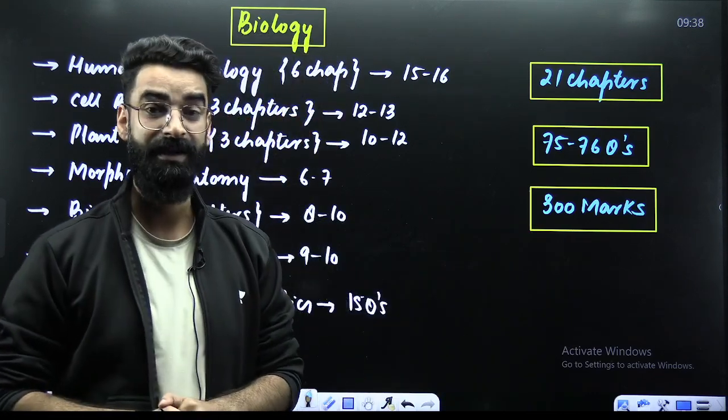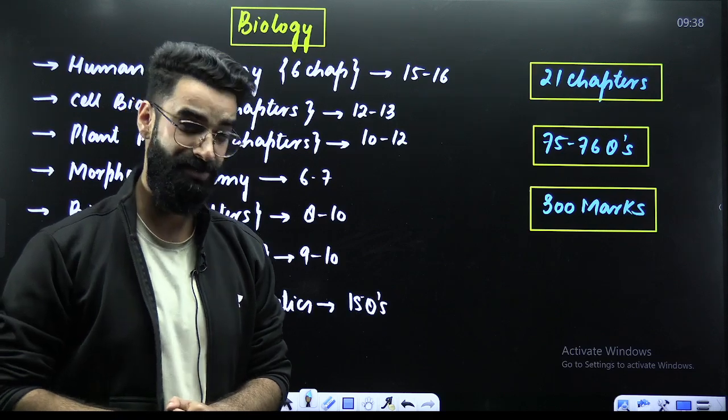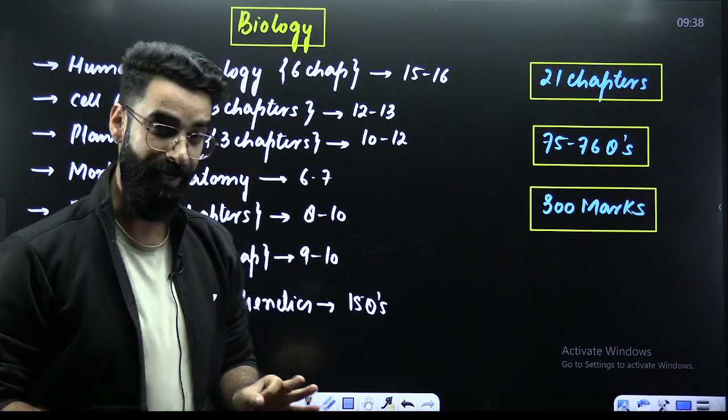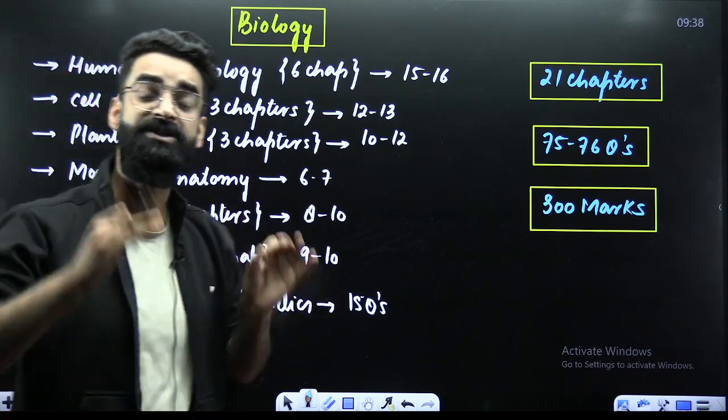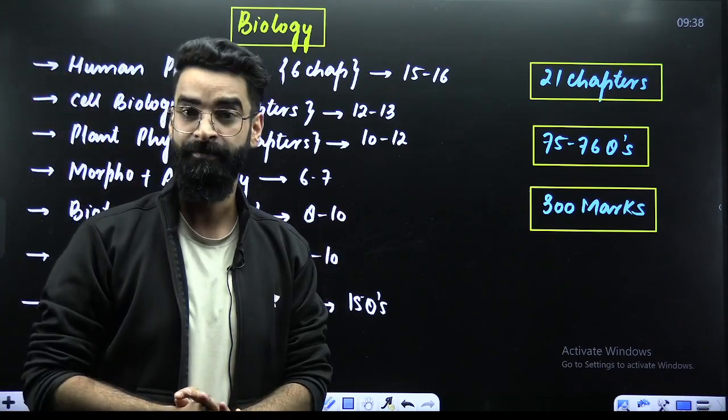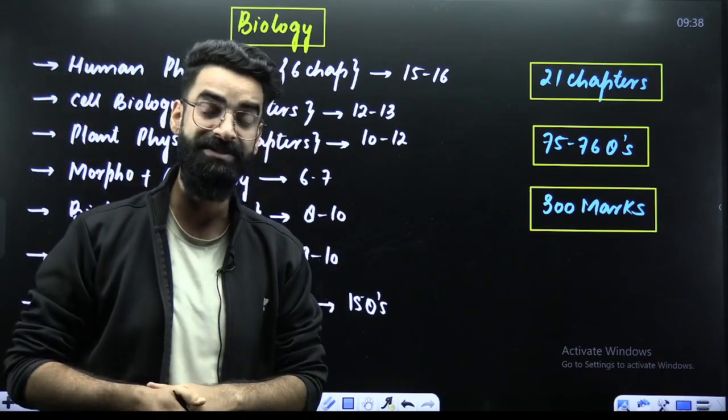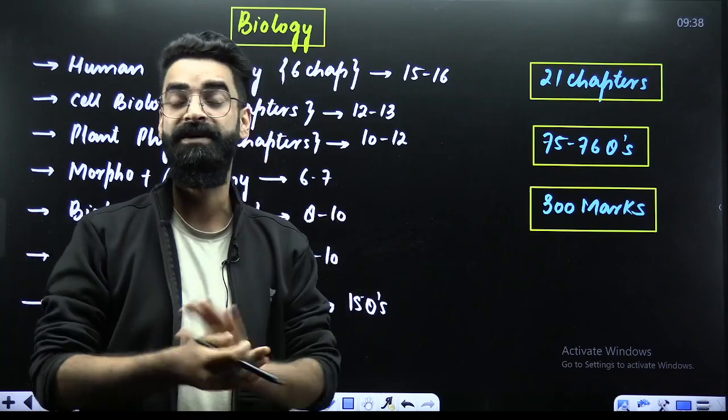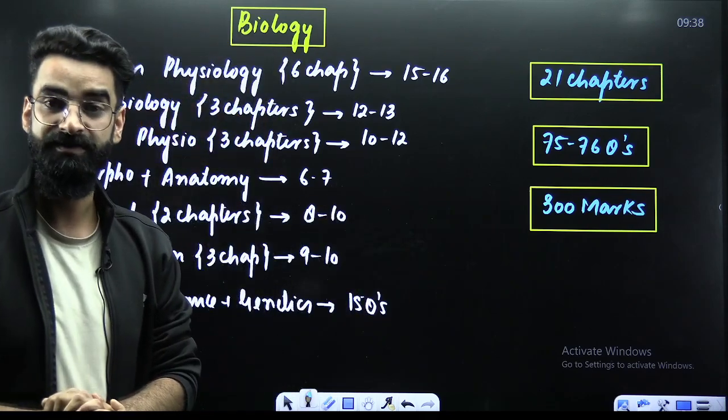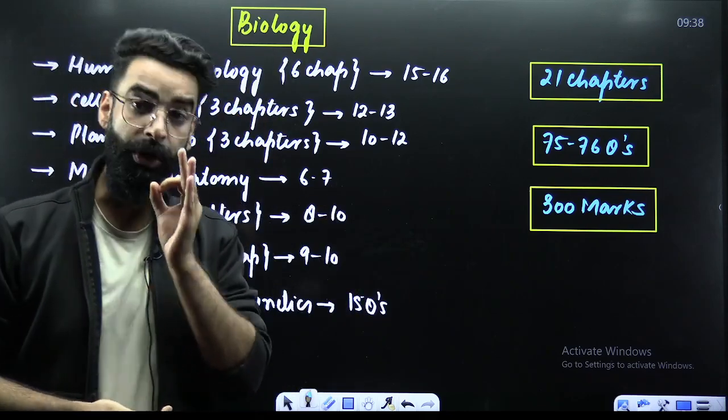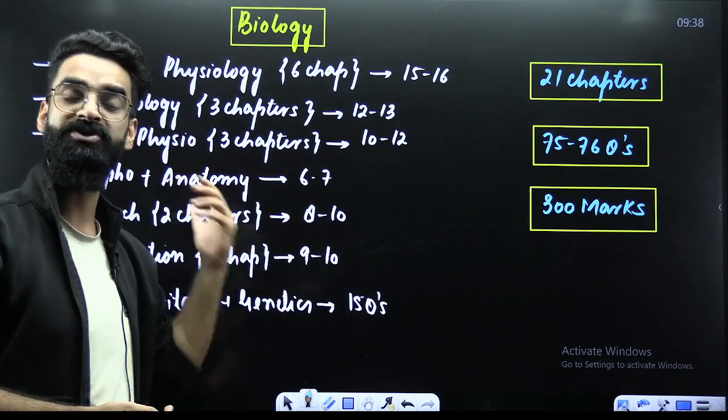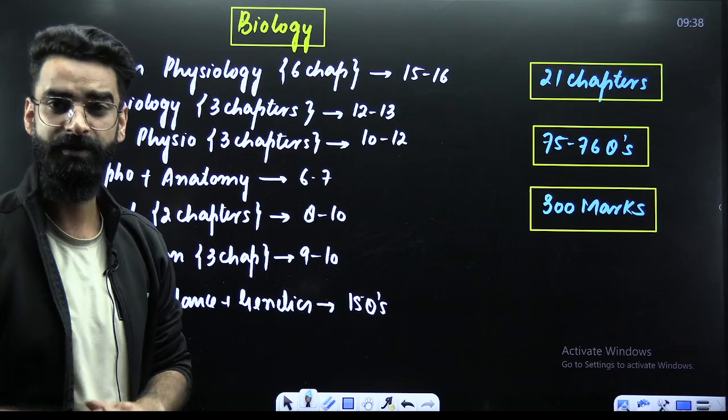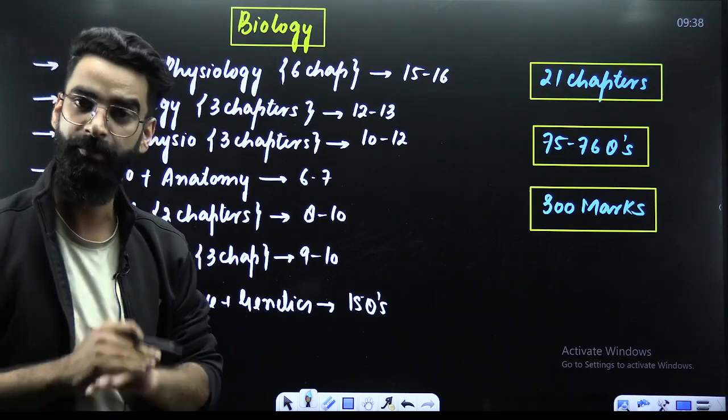Again, I'm repeating the same thing. It does not mean you have to avoid all the other chapters. I'm just trying to convey here, prioritize these the most. They should be your strongest chapters of your Biology. Similarly, the chapters which I've told you in Chemistry should be your strongest chapters. You cannot afford to lose a single topic. You have to complete them from top to the bottom.